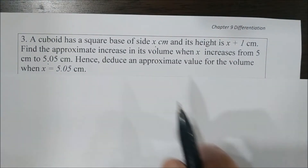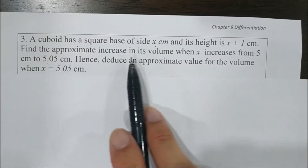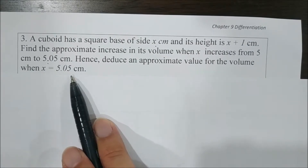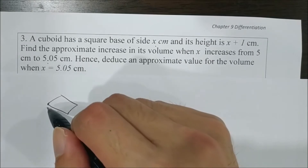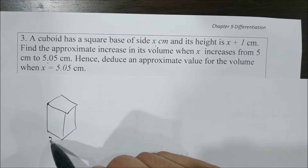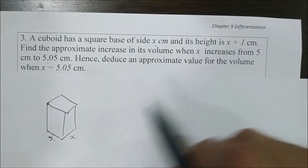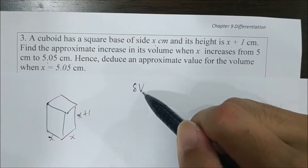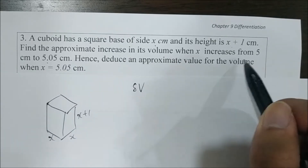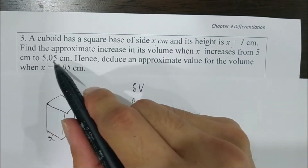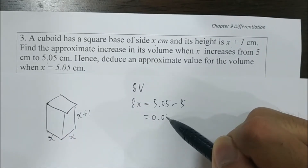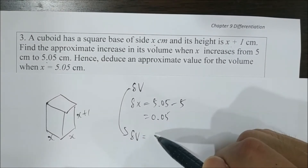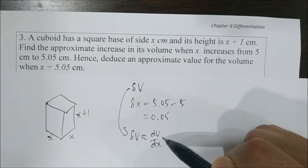A cuboid has a square base of side x centimeters and height of x plus 1 centimeters. Find the approximate increase in its volume when x increases from 5 cm to 5.05 cm. The square base means length and width are both x, and height is x plus 1. We need to find sigma v, the approximate increase in volume. Since x increases from 5 to 5.05, sigma x equals 0.05. To find sigma v, we use the formula: sigma v approximately equals dv/dx times sigma x.